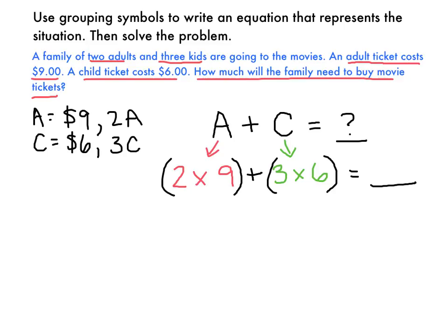And now if I solve, I get 2 times 9 is 18, so it costs $18 for the adults, plus 3 times 6 is 18, so it costs $18 for the kids. And altogether, it would cost $36 for this family to go to the movies.